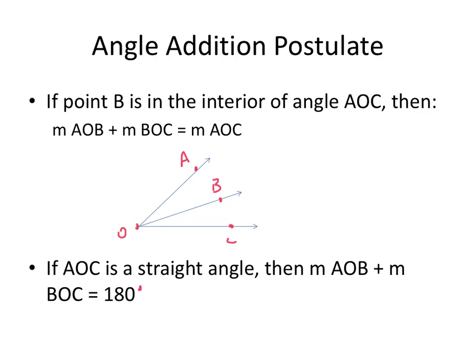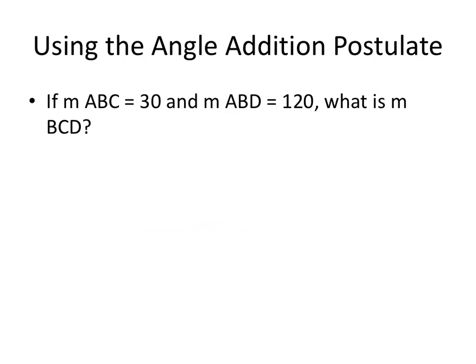if AOC is a straight angle then AOB plus BOC would equal 180 degrees. So this is what this looks like. If you have A here, O and then C and then B somewhere in the middle and we've got a straight angle then they're both going to add up to 180 degrees. And these are what we call supplementary angles and you've probably heard that before.